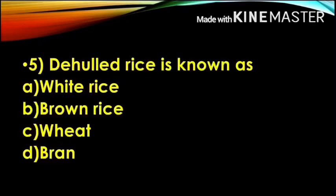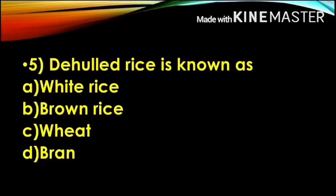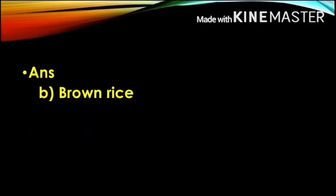Next question: De-hulled rice is known as — Option A, White Rice; Option B, Brown Rice; Option C, Wheat; Option D, Bran. The correct answer is Option B, Brown Rice. De-hulled rice means the husk is removed, resulting in Brown Rice.